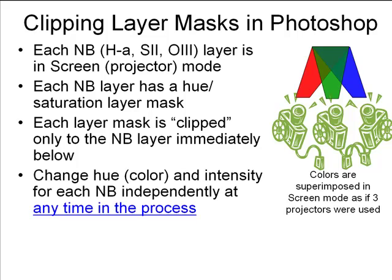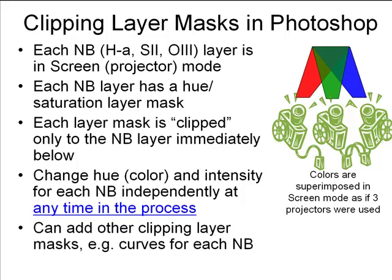What's nice about this procedure is that you can change these parameters for each narrowband dataset independently at any time in the process. Whereas if you use one of the conventional programs where you assign each emission line to red, green, or blue, blend them to get a color you like, and create an RGB color image — at that point you're stuck, you cannot go back. This method allows you to change all color parameters for each HA, S2, and O3 at any time.